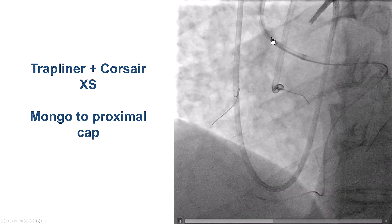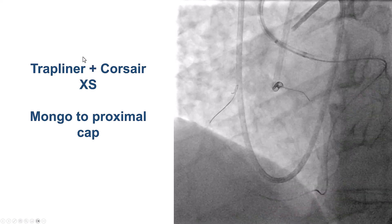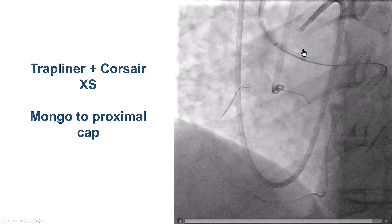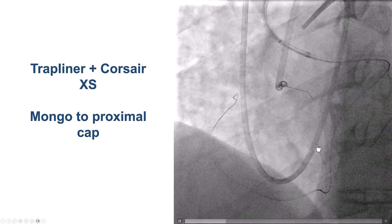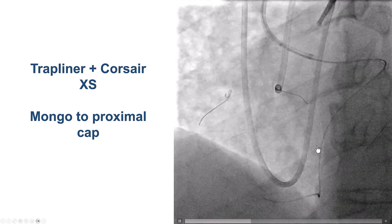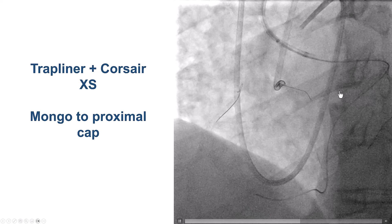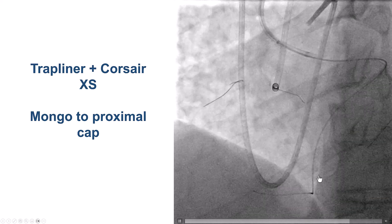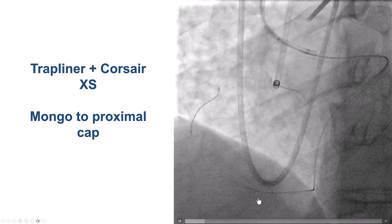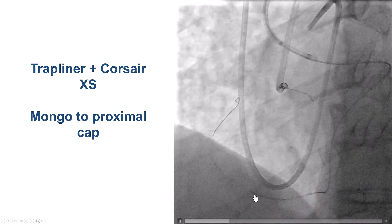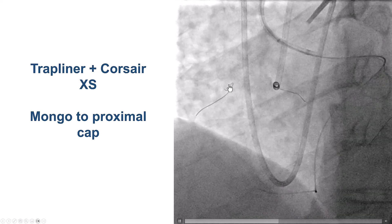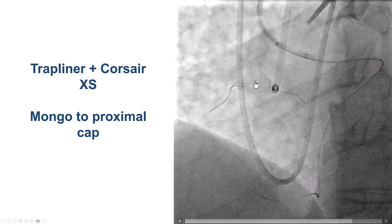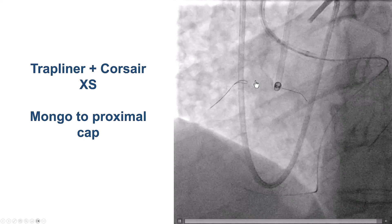In cases like this, one of the first actions is to use a guide extension — we used a Trapliner — and then switch to a different microcatheter. We used a Corsair XS, which can be torqued. By doing this, we were able to advance the microcatheter all the way to the distal right coronary artery, and then advance the Gladius Mongo wire retrograde, close to the proximal cap.